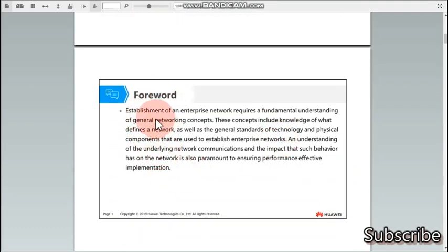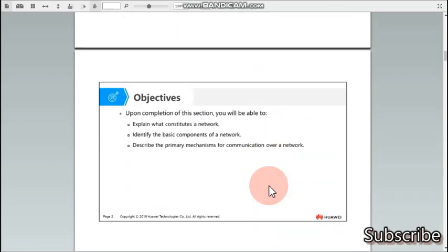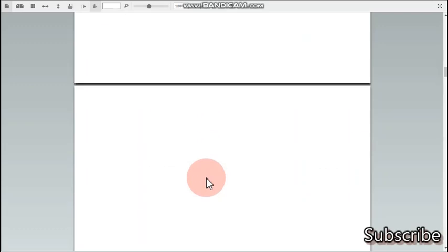Forward establishment of an enterprise requires a fundamental understanding of general networking concepts. These concepts include knowledge of what defines a network as well as the original standards of technology and physical components that are used to establish enterprise networks. An understanding of the underlying network communications and impact that such behavior has on the network is also paramount to ensuring effective implementation. The objectives of these topics are: explain what constitutes a network, identify the basic components of a network, and describe the primary mechanisms for communication over a network.